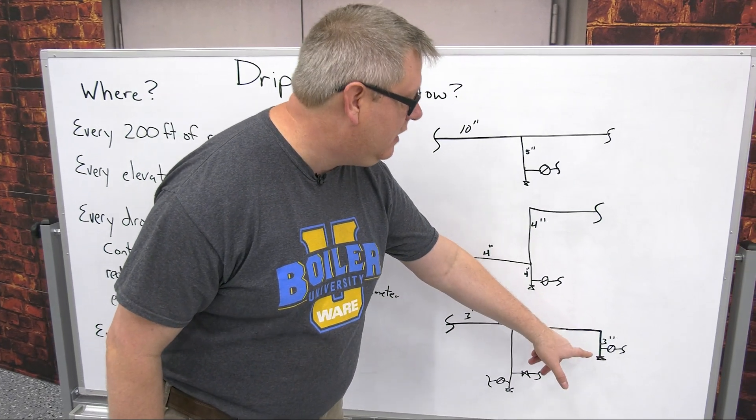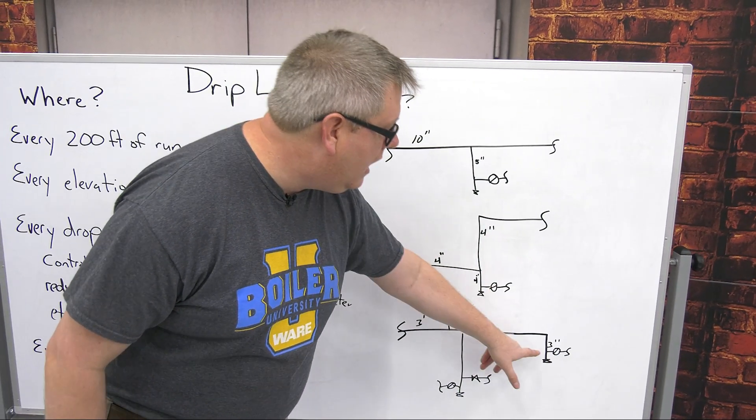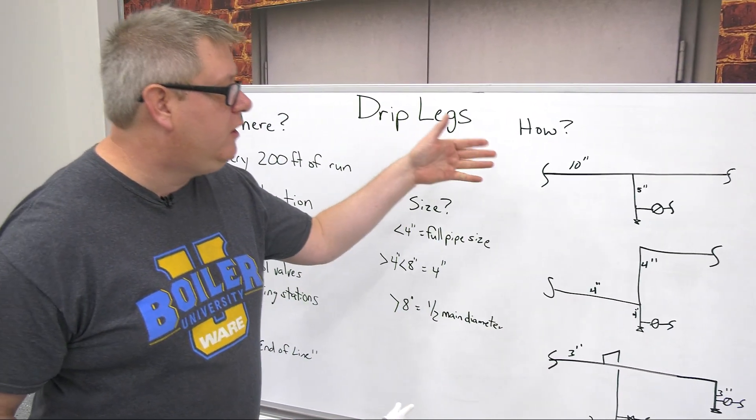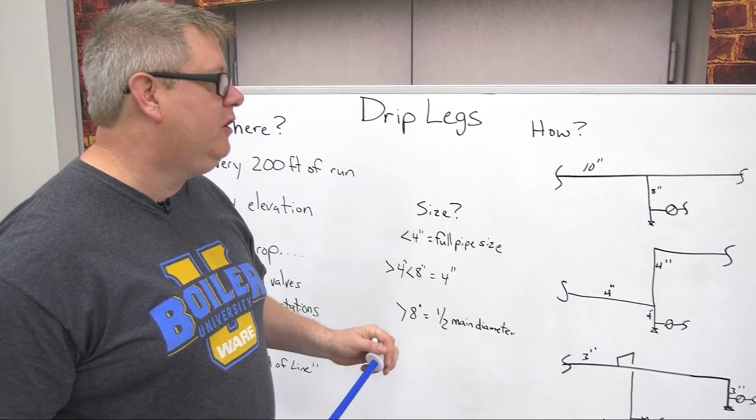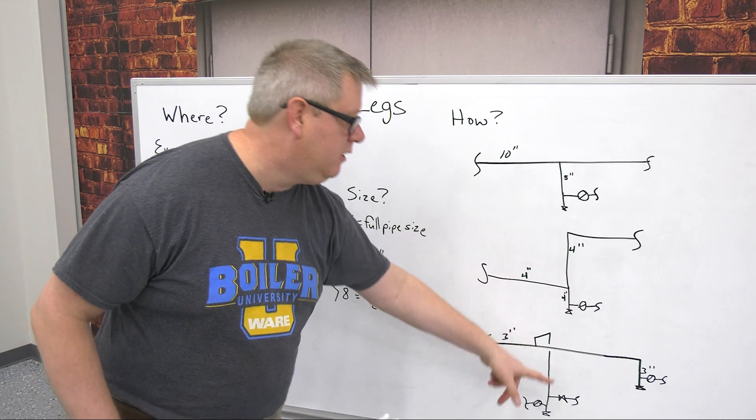So we'll drop with a 90 if we want to. We can use a T and put an air vent on there if we want. Come out the side to our trap. So those are different examples of how we would pipe those drip legs in. We've got a drip leg component and we've got a trap component.